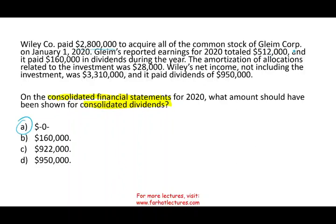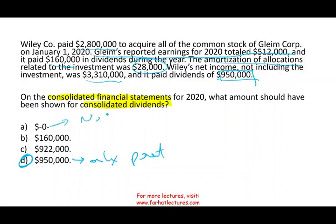Wiley paid $2.8 million to acquire all common stock of Gleim on January 1st. Gleim reported earnings of $512,000 and paid dividends of $160,000. Amortization of allocation related to the investment was $280,000. Wiley's net income (excluding investment income) was $3,310,000 and it paid dividends of $950,000. The answer is $950,000 — only the parent company's dividend. The subsidiary's dividend of $160,000 does not appear on the consolidated financial statement.